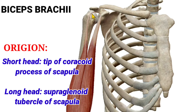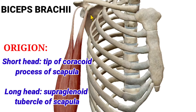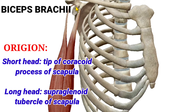The long head of biceps brachii is originated from the supraglenoid tubercle. This structure is the glenoid tubercle on the scapula — 'supra' means above, so the tubercle above the glenoid cavity is the supraglenoid tubercle. So the long head is originated from the supraglenoid tubercle, and the short head is originated from the coracoid process of scapula.